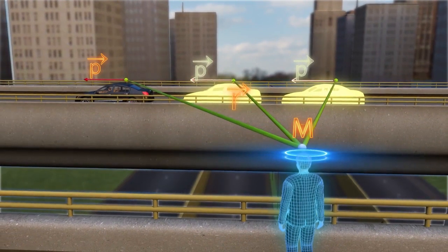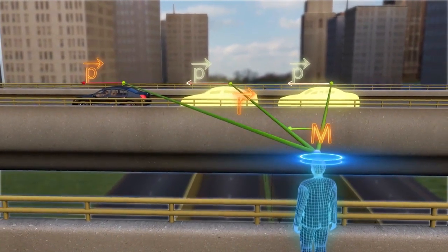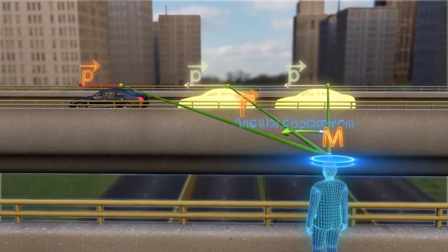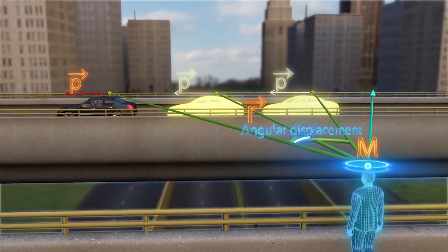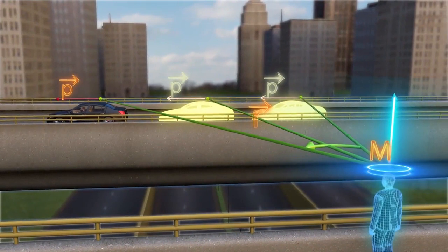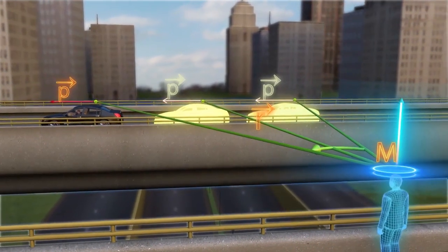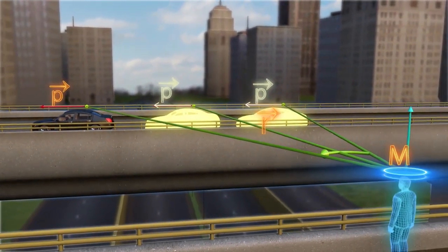The observer experiences some angular displacement due to the change in angle. Thus, it can be concluded that every moving object has angular displacement about a point or axis of reference, and hence it has angular momentum.